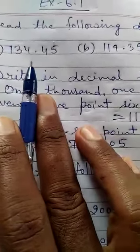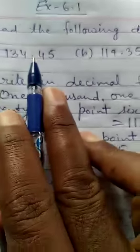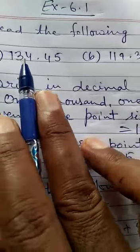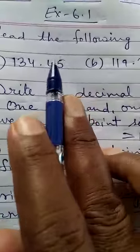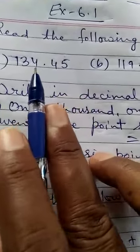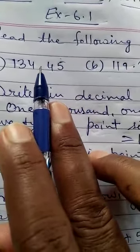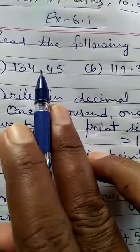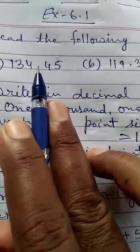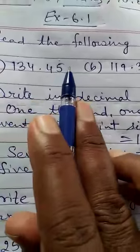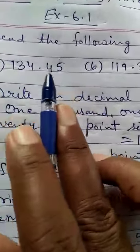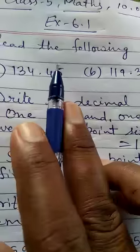What is a decimal number? The numbers written in decimal form. In this, the whole number part is here and the decimal part is here, and they are separated by the decimal point. For example, 134.45 - here 134 is the whole number and 45 is the decimal part.